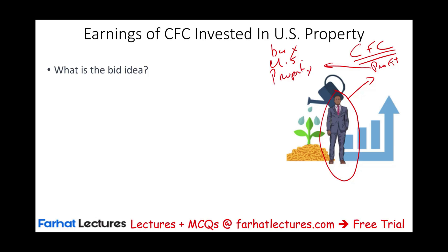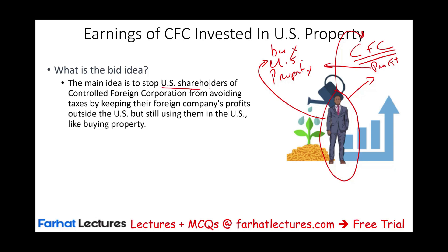This individual, if you think about it, controls this property — because if they are a shareholder in this controlled foreign corporation, in a sense they own part of this U.S. property. They can enjoy it, they can control it. So the main idea is to stop U.S. shareholders of controlled foreign corporations from avoiding paying taxes by keeping their foreign company's profit outside the U.S. but still using it in the U.S., like buying property.